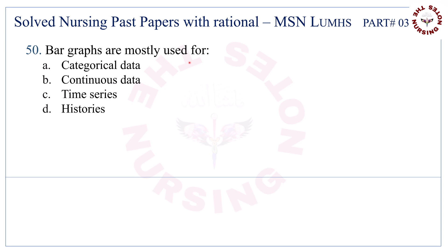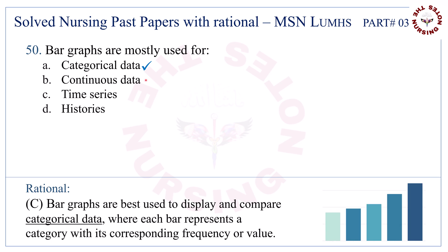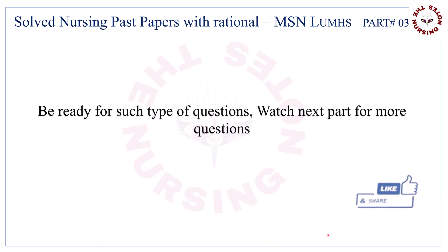Question number 50. Bar graphs are mostly used for — the correct answer is A — categorical data. Be ready for such type of questions; watch the next part for more questions.